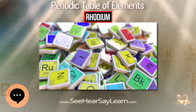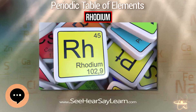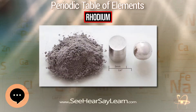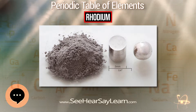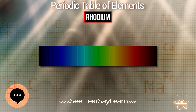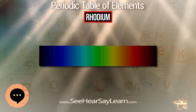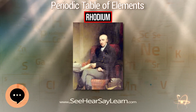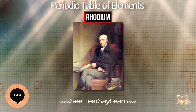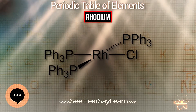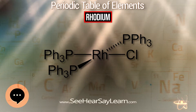Rhodium is a chemical element with symbol Rh and atomic number 45. It is a rare, silvery-white, hard, corrosion-resistant and chemically inert transition metal. It is a noble metal and a member of the platinum group. It has only one naturally occurring isotope, 103Rh. Naturally occurring rhodium is usually found as the free metal alloyed with similar metals.